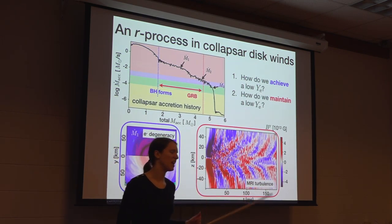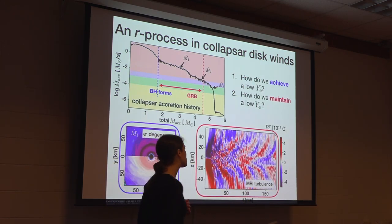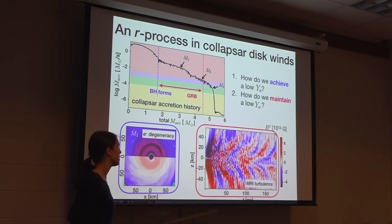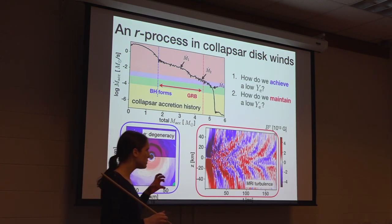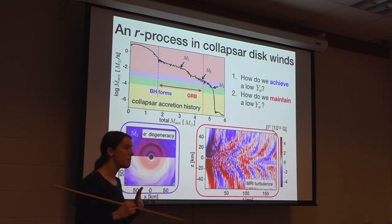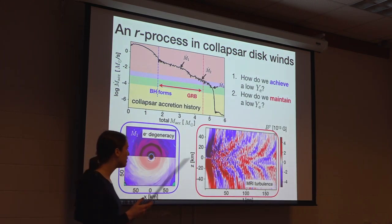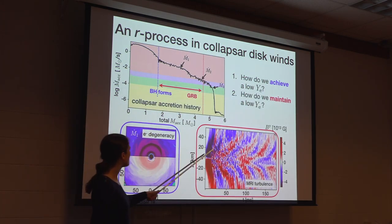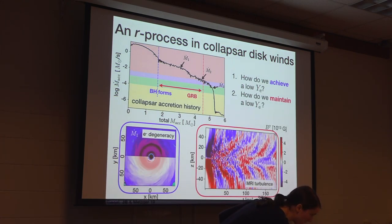Because we were doing a full 3D calculation that included MHD, we were able to resolve the magnetorotational instability in the disk, and we found that actually the thing that unbound the material was not neutrino absorptions, but MRI turbulence. This turbulence is so effective at removing material from the midplane that the material liberated didn't really have time to suffer that many neutrino absorptions before it made it out of the disk and started outflowing, allowing us to create and preserve the low electron fraction required for a robust R-process.